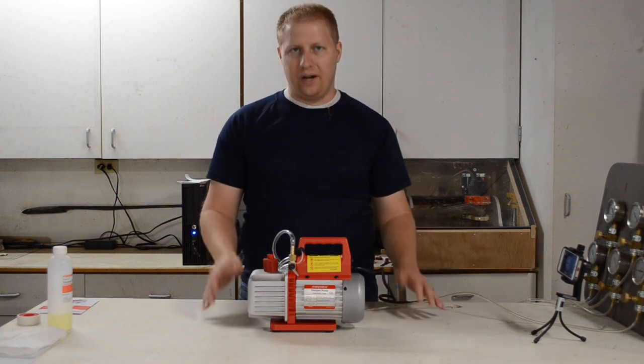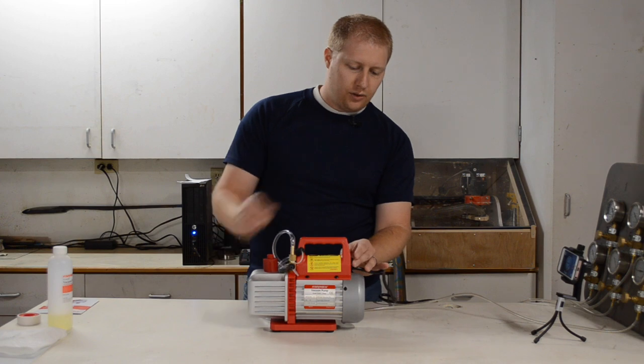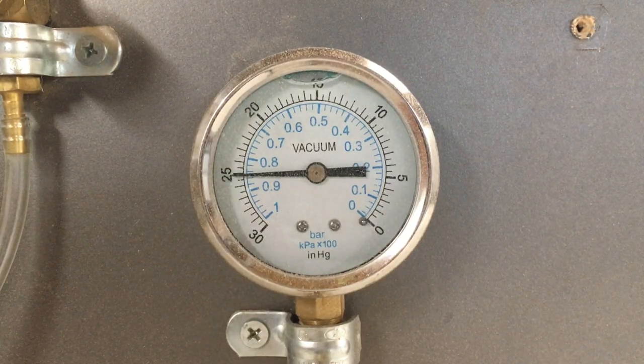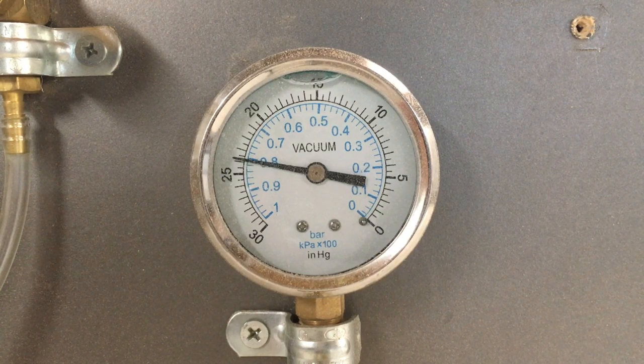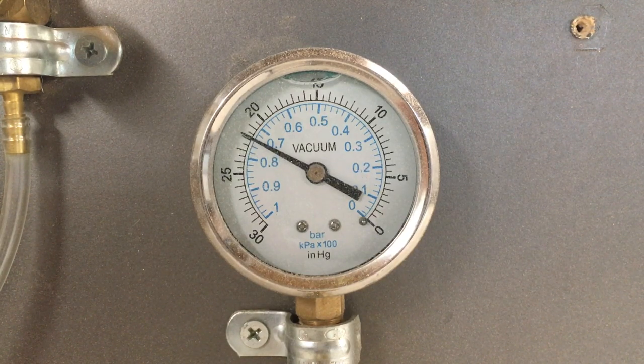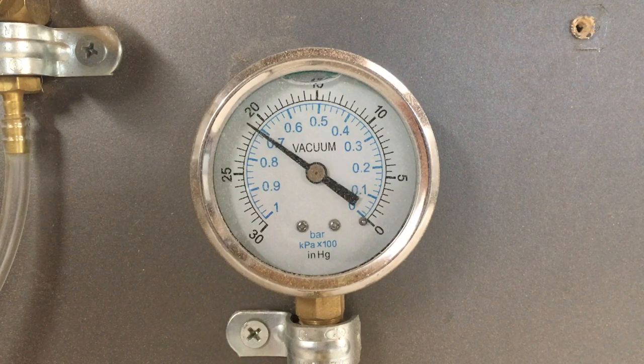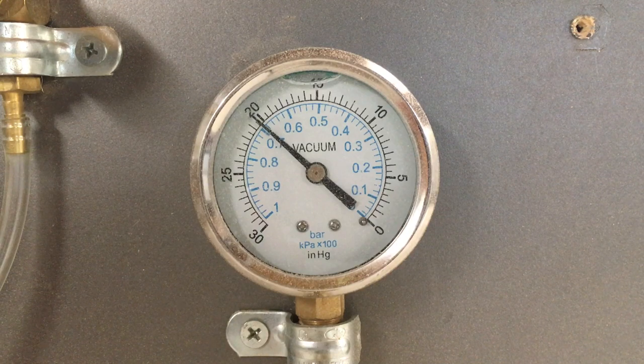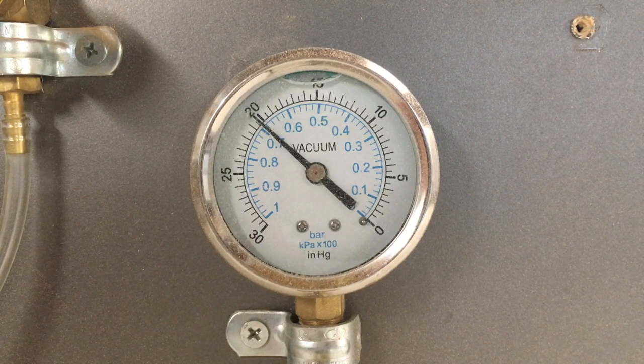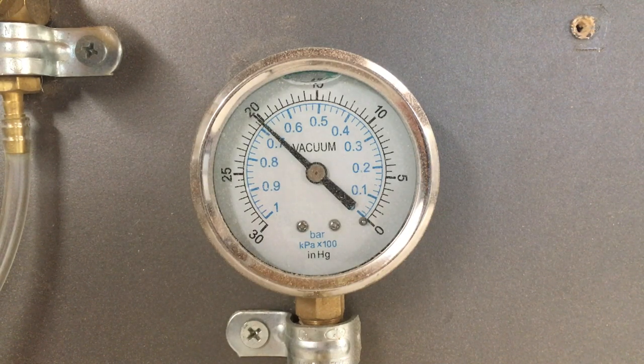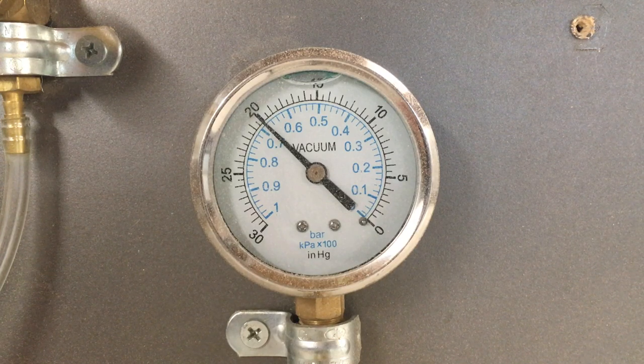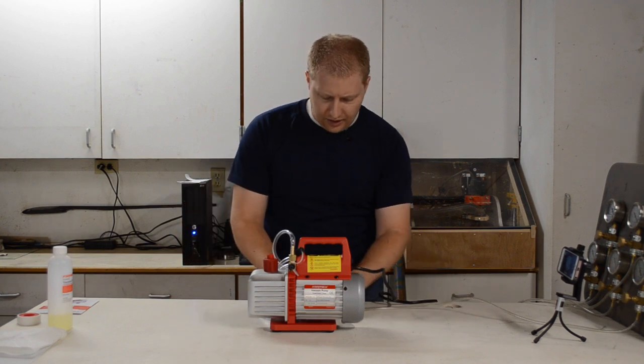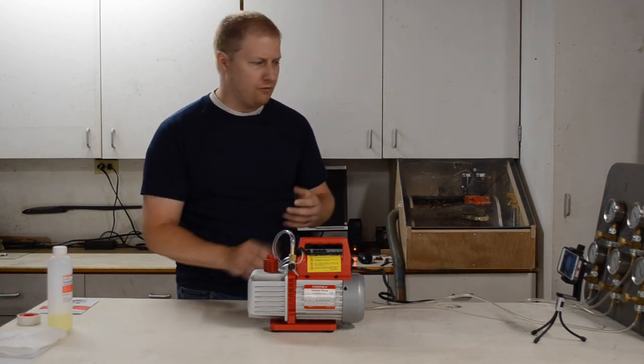Alright next, I want to see what the leak rate is on this machine. Let's go ahead and turn it off and see how quickly it loses vacuum. Alright, so we lost quite a bit at first. We look like we're settling right around 20 inches of mercury and it's dropping very very slowly now. So we do have a little bit of a leak rate. I wonder if we can clean that up with just a little bit of bag sealant tape.